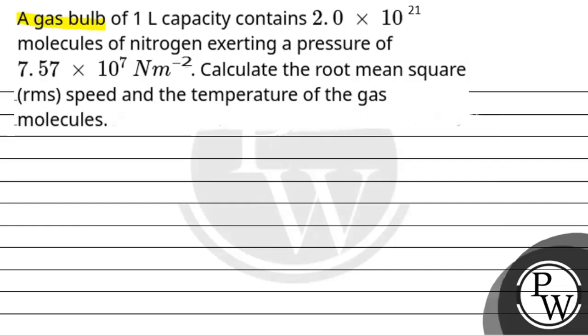Let's read the question. The question says a gas bulb of 1 liter capacity contains 2.0 × 10^21 molecules of nitrogen exerting a pressure of 7.57 × 10^7 Newton per meter square.